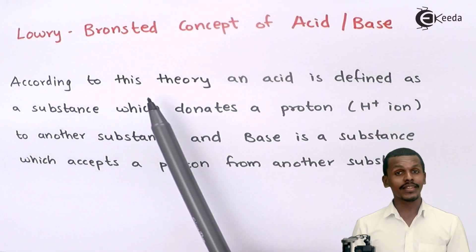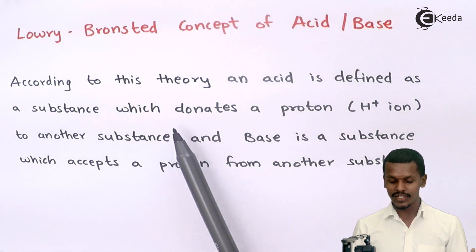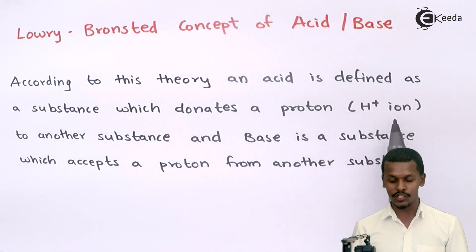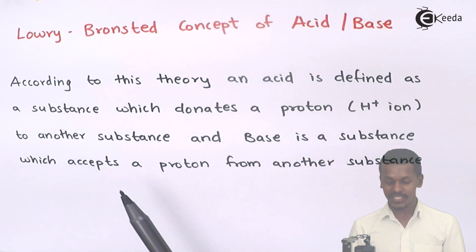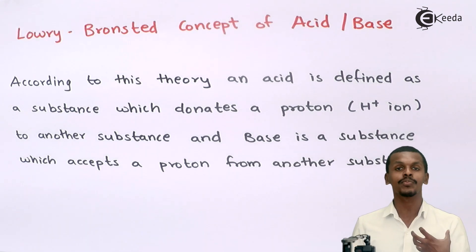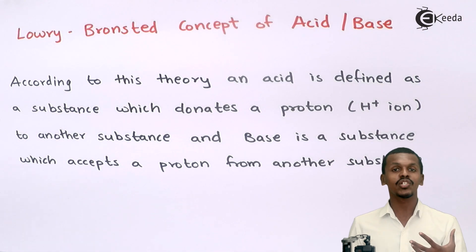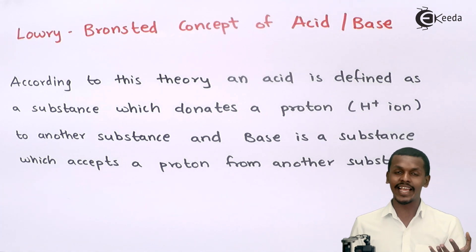According to the Lowry-Bronsted theory, an acid is defined as a substance which donates a proton, that is H⁺ ion, to another substance. And a base is a substance which accepts a proton from another substance. So basically, this theory deals with proton donating and proton accepting.